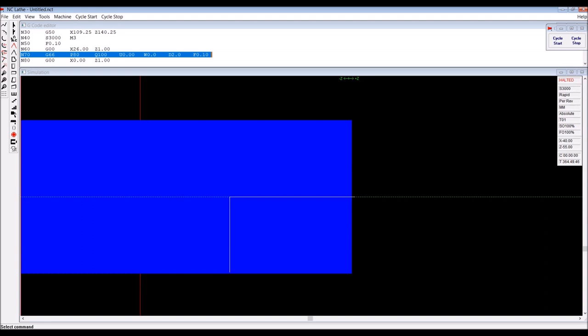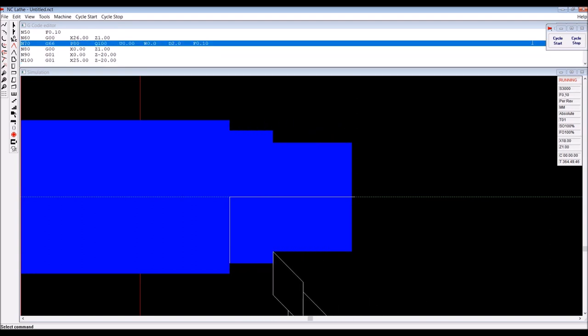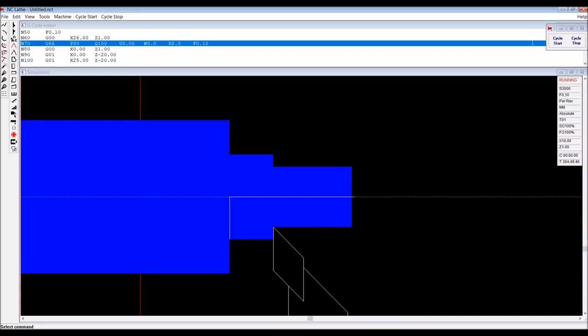That's leaving nothing on the faces, nothing on the diameters, depth of cut of two millimeters, and a feed of 0.1 per rev.